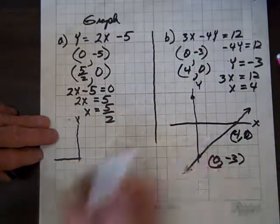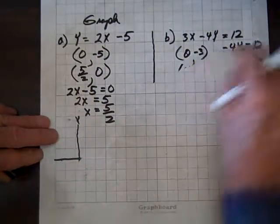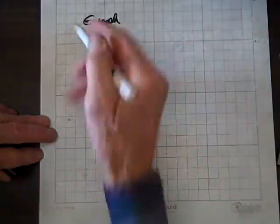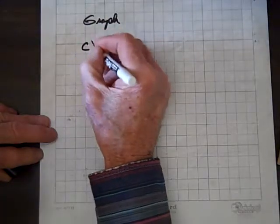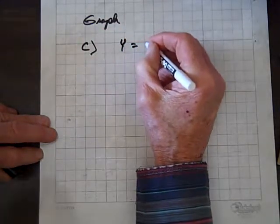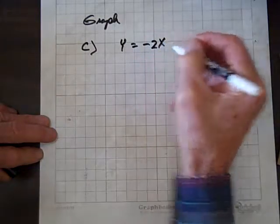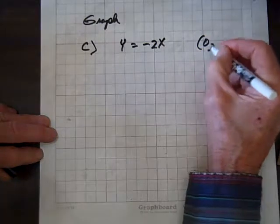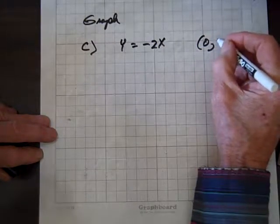But let me show you one more you might run into, which can present a problem. We'll call it c. What if you have something like y equals negative 2x? Well, if we let x be zero, turns out y is going to be zero also.